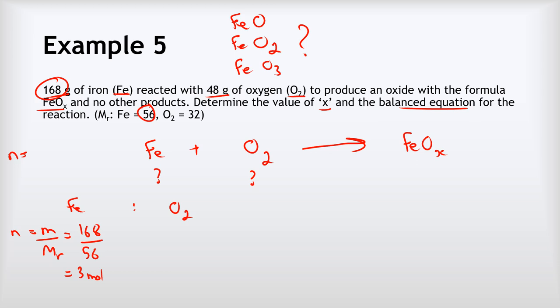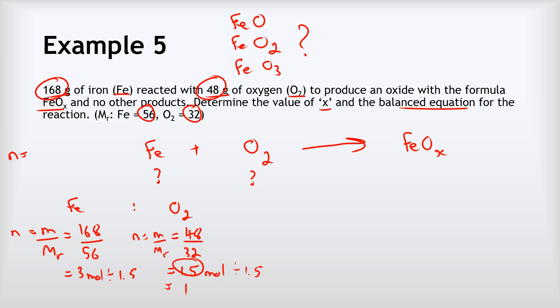Moles of O₂ = m/MR = 48 grams divided by 32, giving 1.5 moles. Dividing both values by 1.5 to simplify: 3 ÷ 1.5 = 2, and 1.5 ÷ 1.5 = 1. So the ratio is 2 to 1, meaning two Fe to one O₂. In the equation we put a big 2 in front of Fe and leave the O₂ coefficient as one.